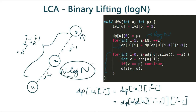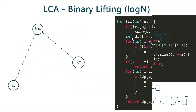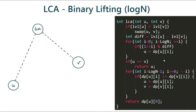Now let's see how we can find the LCA of two nodes in O(log n) time. Here is the code for LCA. Given two nodes U and V, assume the level of U is greater than the level of V, meaning U is deeper than V. We check the levels of U and V, and if the level of U is less than V, we swap U and V to ensure node U is always deeper.